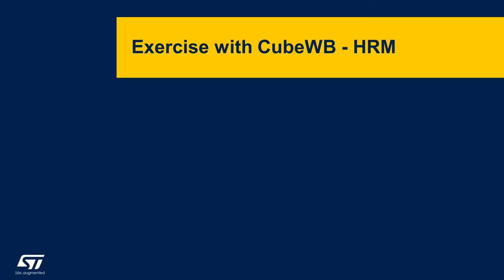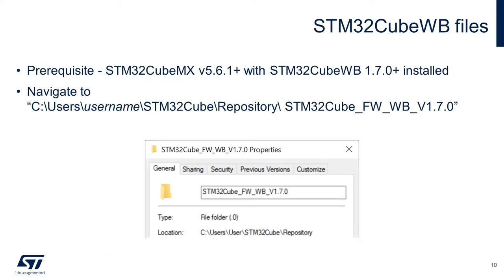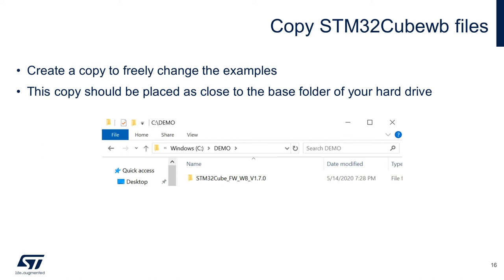Let's have a simple exercise by copying the example project. After copying it, our goal is to change some configurations, build and debug the project. Make sure you have the aforementioned prerequisites. To copy the files, navigate to the default STM32Cube directory. I'm going to create a copy so that we can freely change the examples later on. Please note, this copy should be placed as close to the base folder of your hard drive as possible. In my case, I'm going to create a new folder called demo in my C drive.